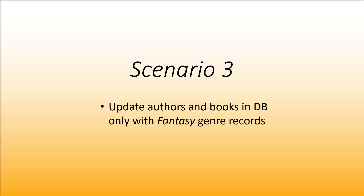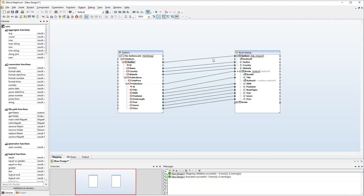In the third scenario, our goal is to update authors and books only with the fantasy genre records. Let's first filter the authors and map only those whose books belong to the fantasy genre. To insert a filter, right-click the connection between the Author and Authors nodes.